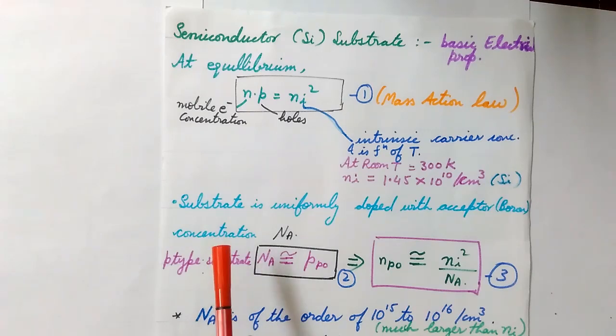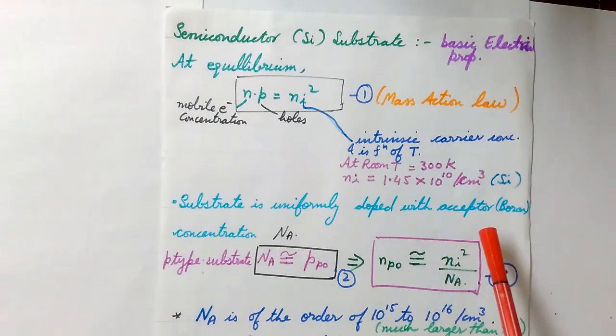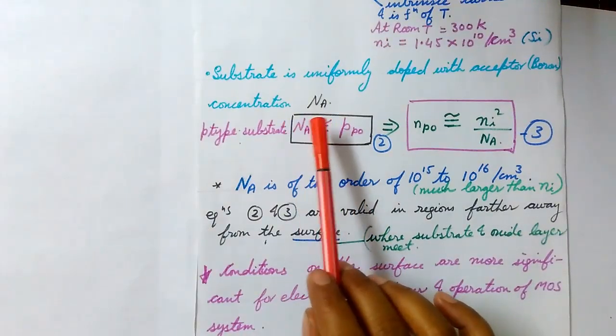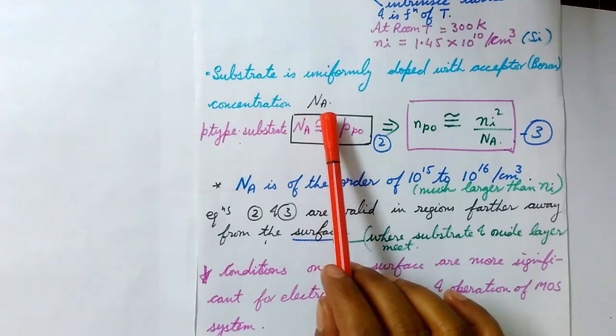The substrate, which is p-type, is uniformly doped with acceptor. Since it is p-type, we will use trivalent impurities, which are also known as acceptor—for example, boron. Its concentration is written as capital N suffix A.